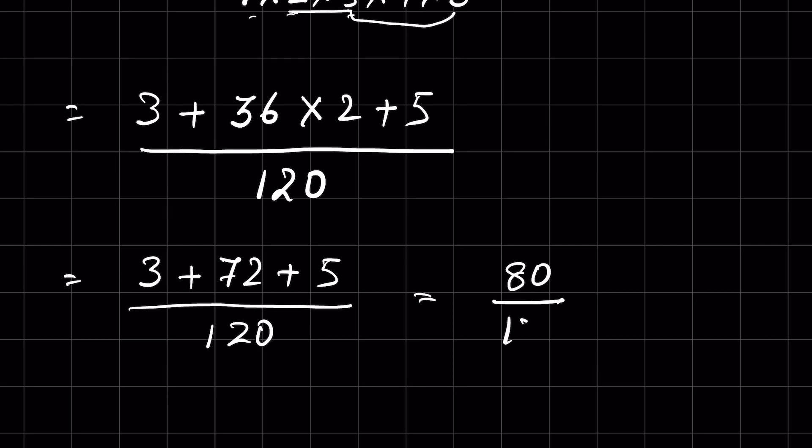Now divide both numerator and denominator by 4. 8 divided by 4 is 2, and 12 divided by 4 is 3. So the answer is 2 upon 3.